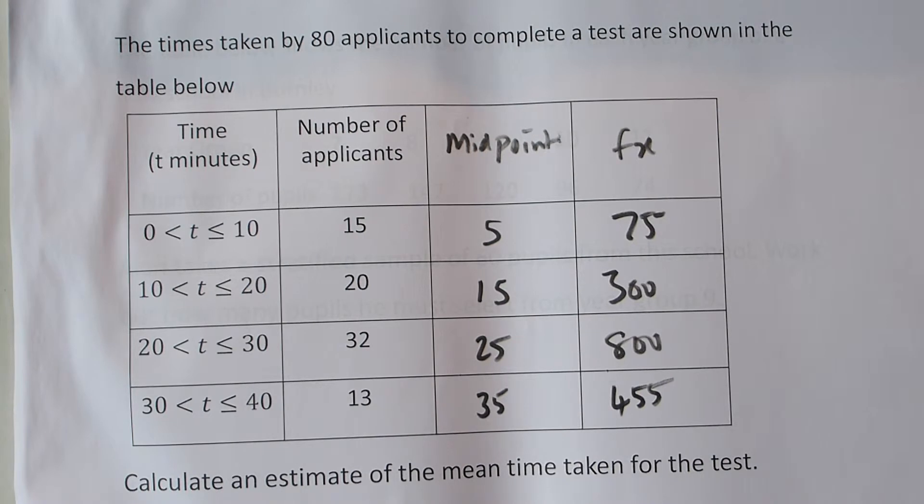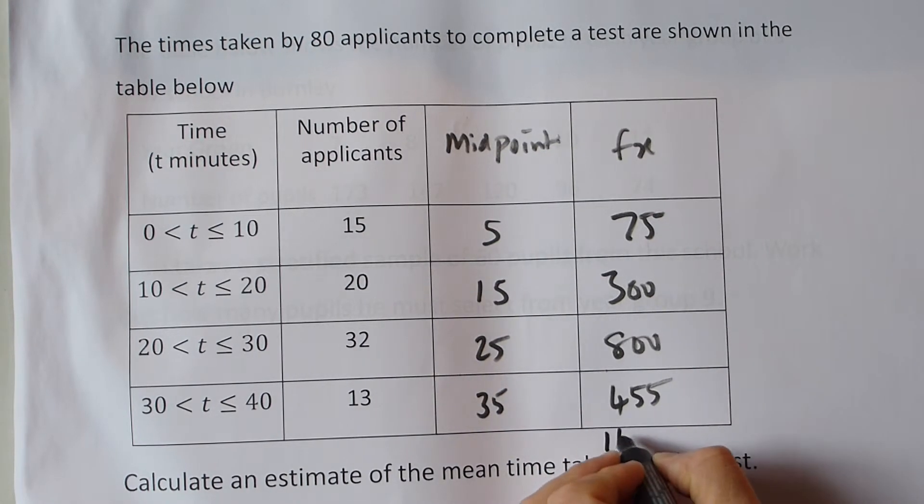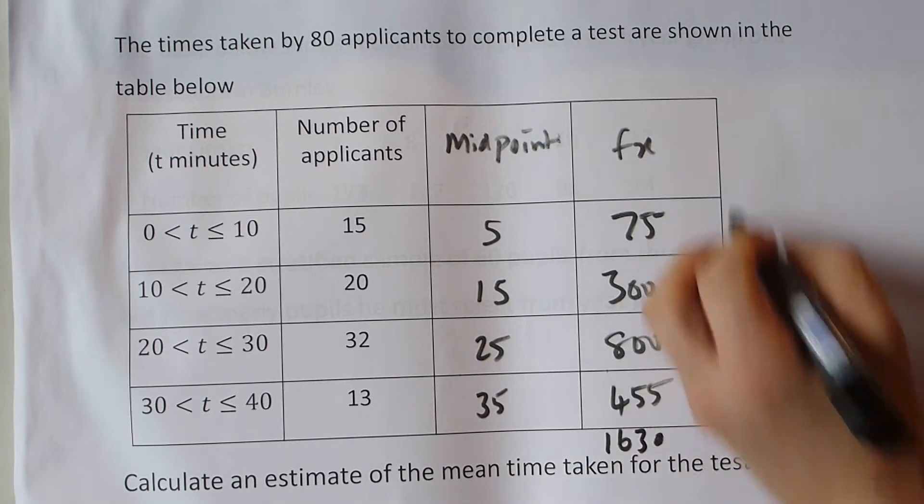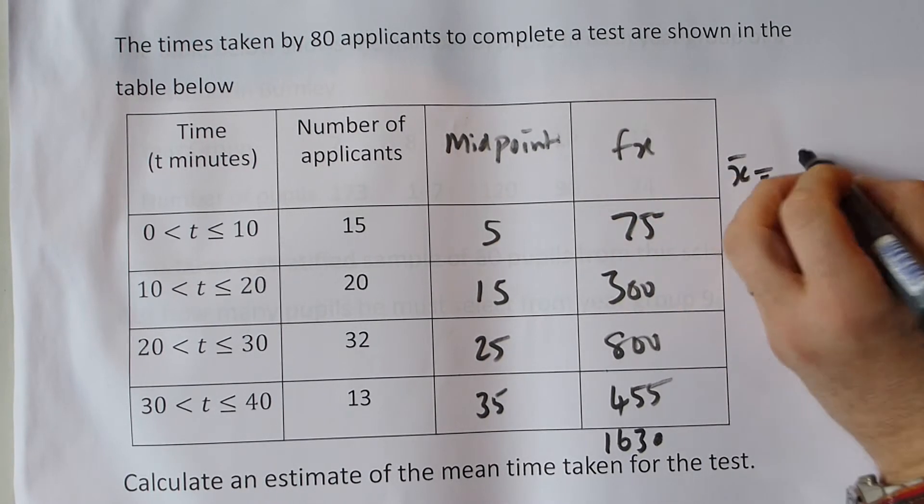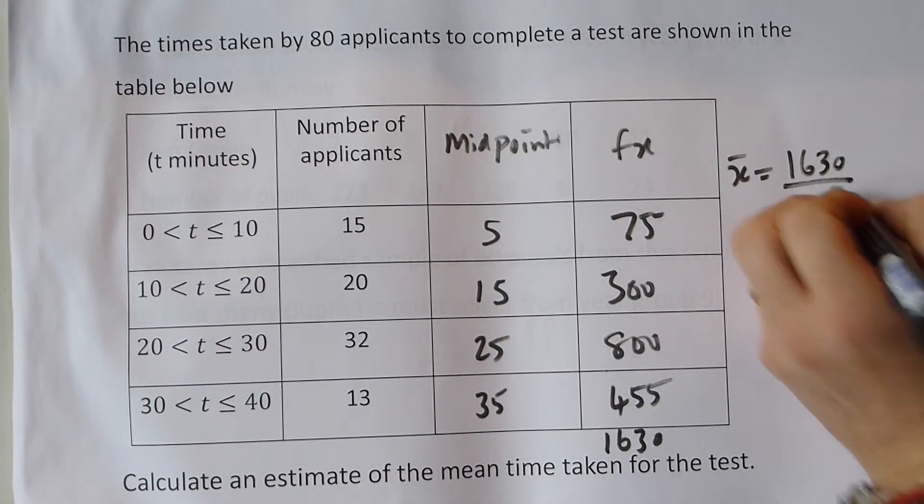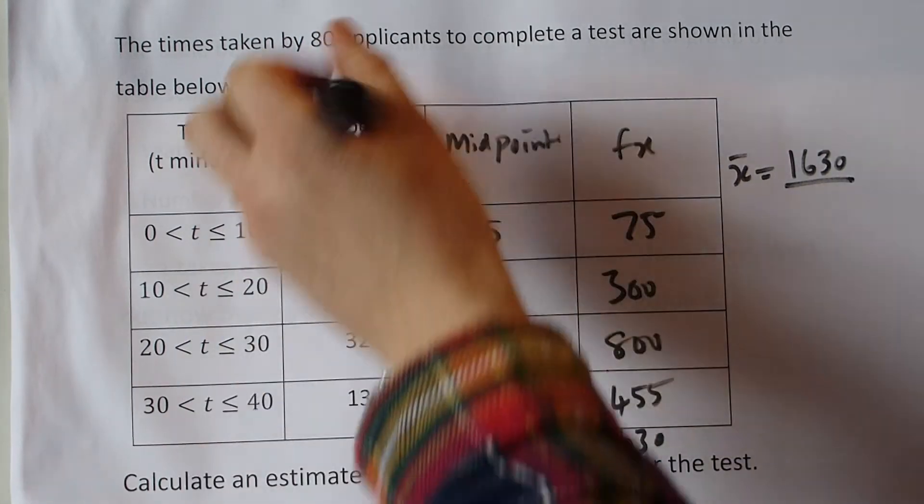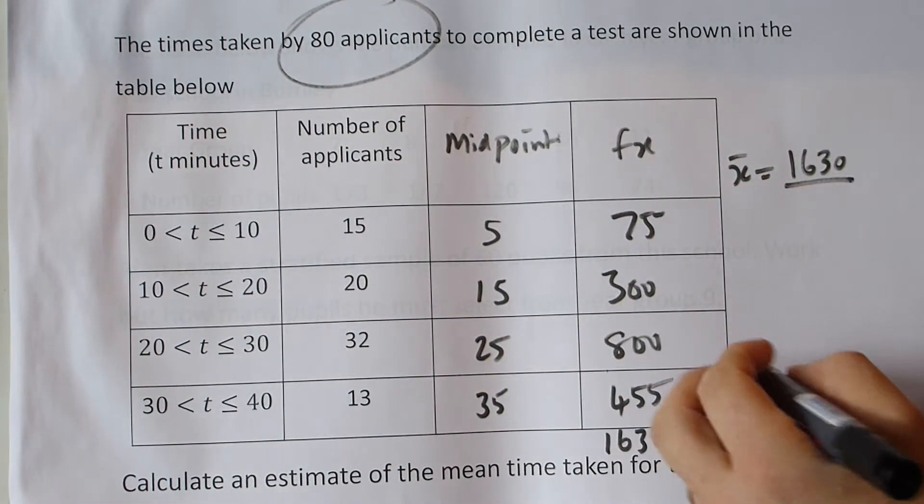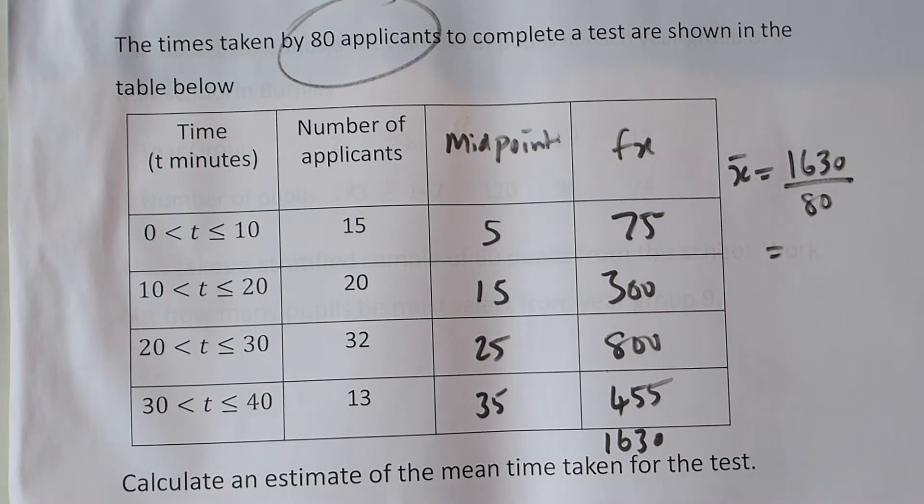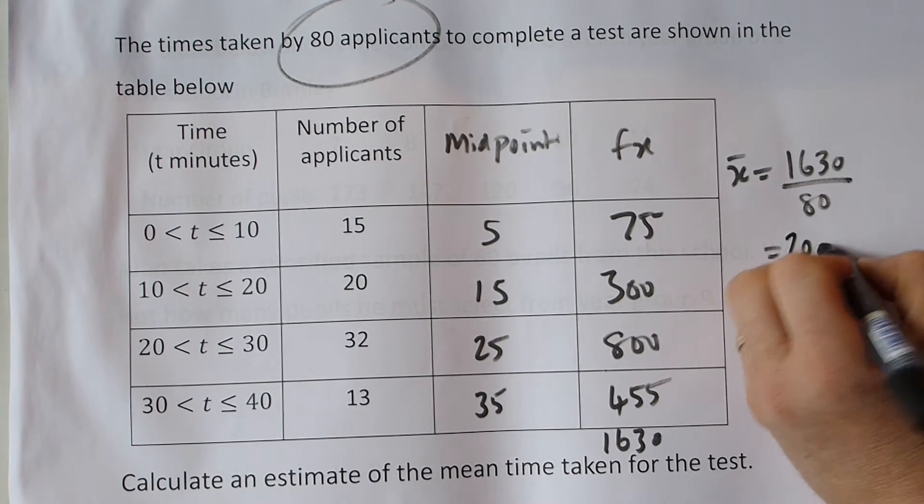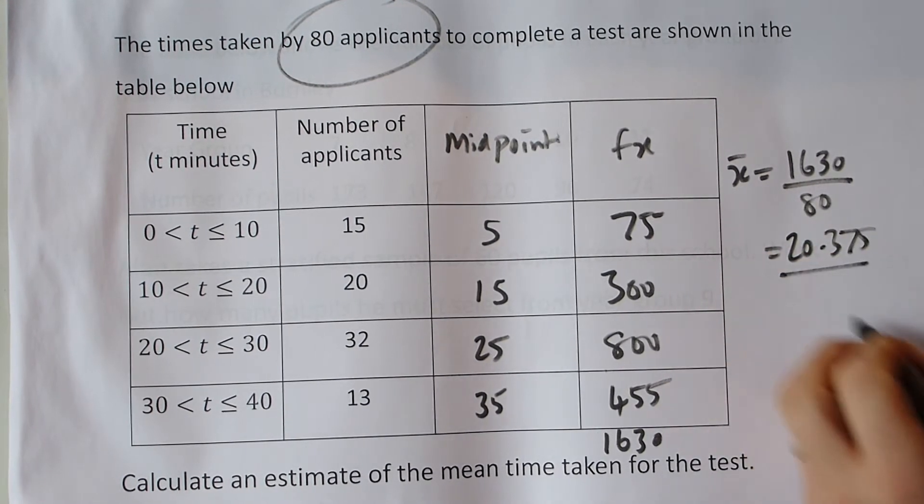So if I add this column together, we've got 455 add the 800 add the 300 and add the 75, that gives us a total of 1630. So the mean is equal to that grand total divided by not how many columns there are, but how many applicants there were altogether, which was 80. So I divide by 80 and that gives us an average of 20.375 minutes.